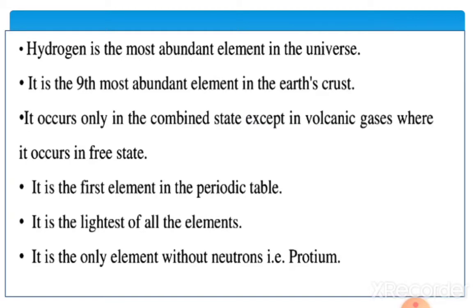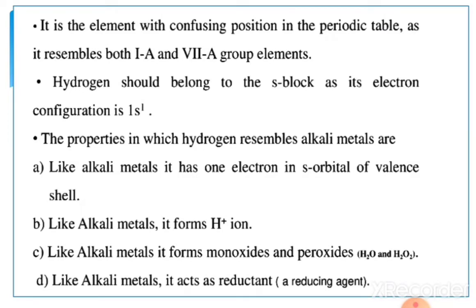Hydrogen is the most abundant element in the universe and the 19th most abundant element in the earth's crust. It occurs only in the combined state, except in volcanic gases where it occurs in free state. It is the first element in the periodic table and the lightest of all elements. It is the only element without a neutron — that is protium.